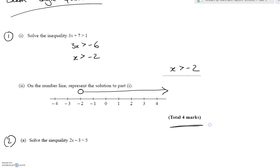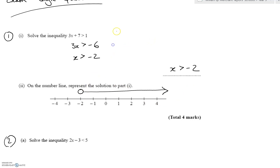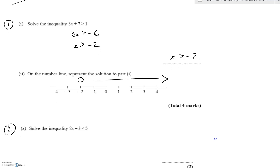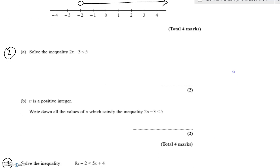So that's four marks — quite nice marks really. A couple of marks for solving your inequality and a couple for getting the right number and drawing the arrow in the right direction. Nice marks if we know what we're doing. You can get these written down and refer back to them — pause the video if you need to.